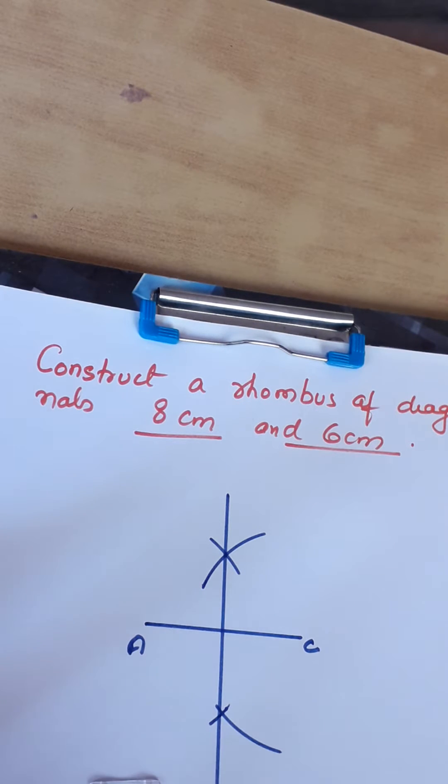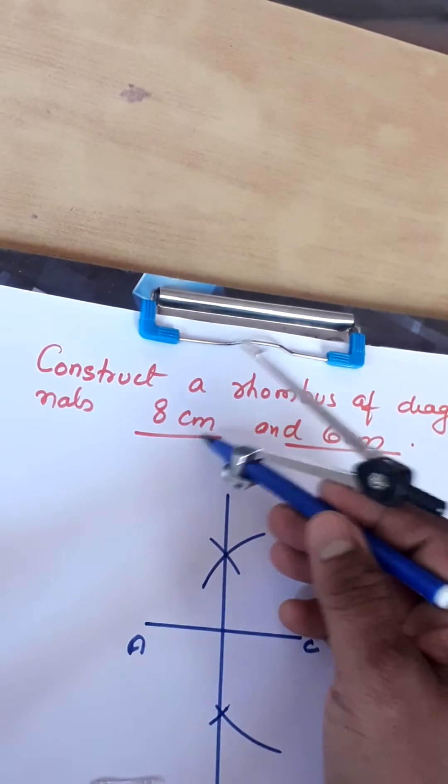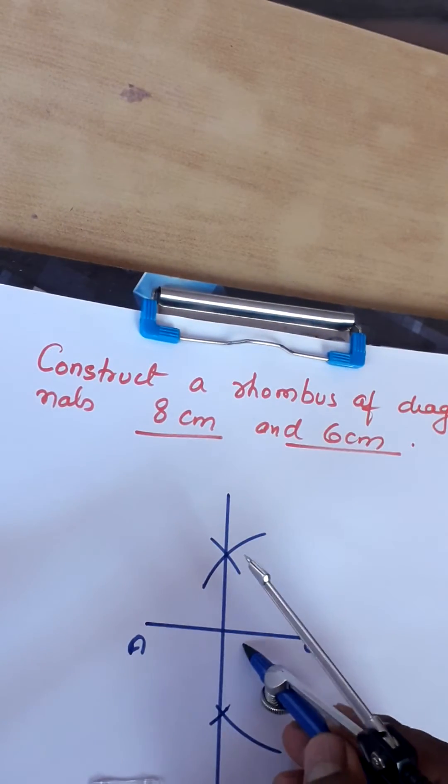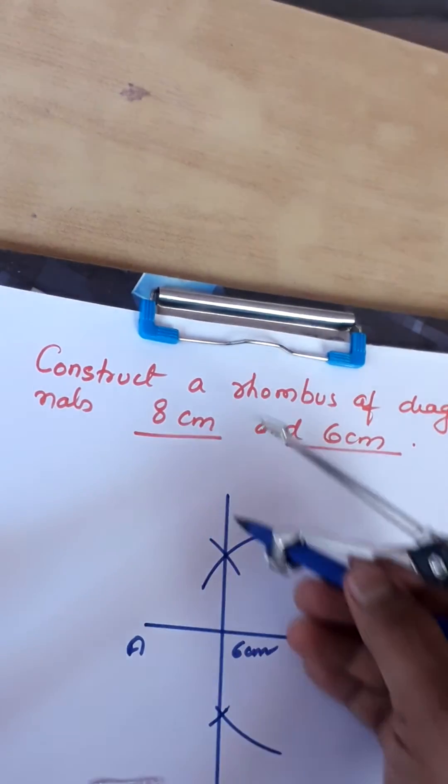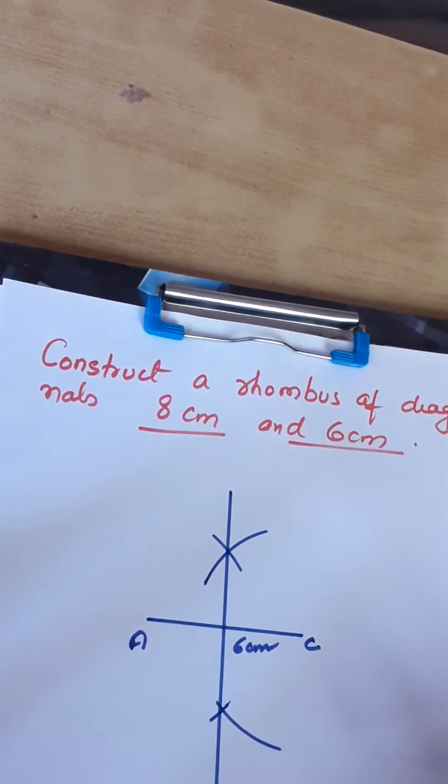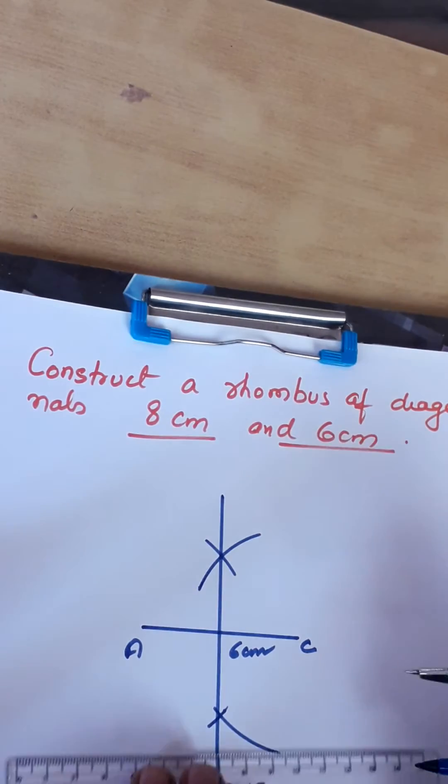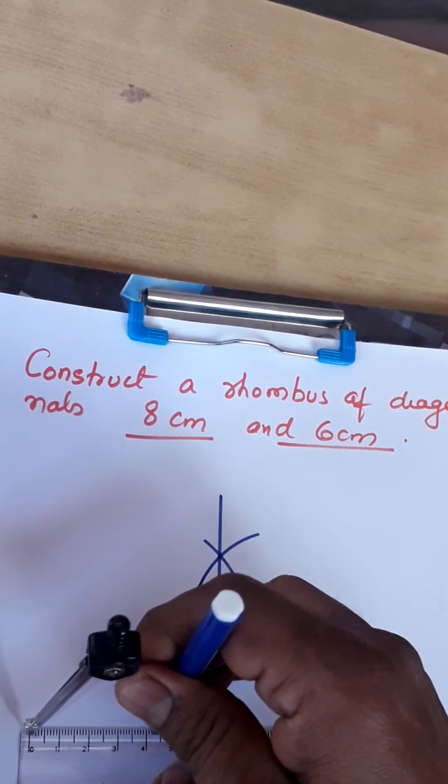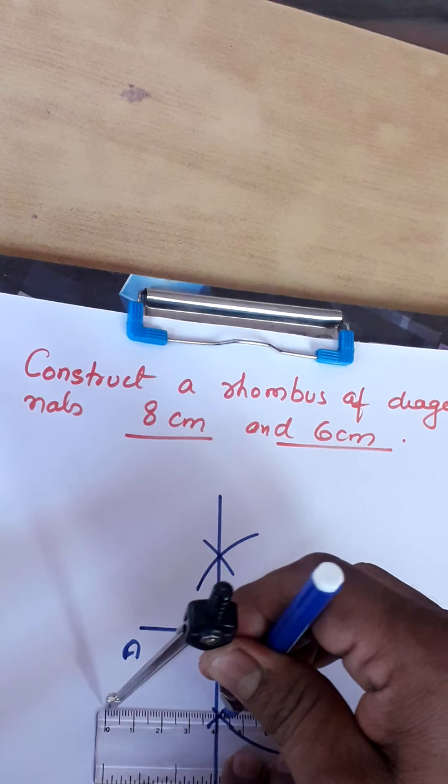Now length of other diagonal is 8 centimeter. This AC is of measure 6 centimeter. Now we will measure here 4 centimeter.